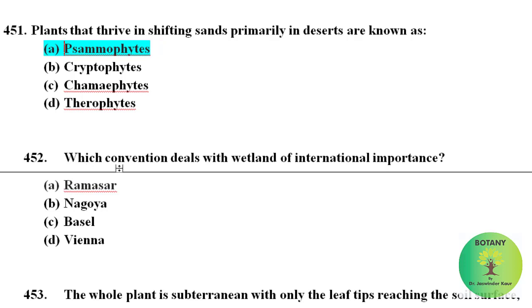Plants that thrive in shifting sands, primarily in deserts, are known as psammophytes. The convention that deals with wetlands of international importance is the Ramsar Convention.